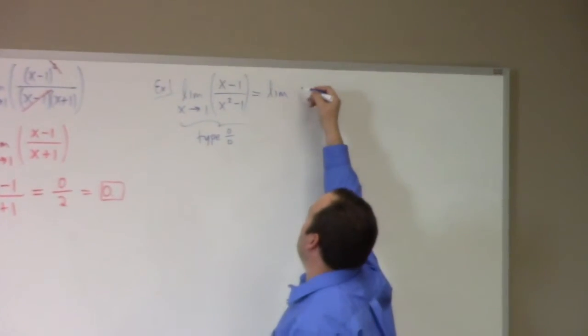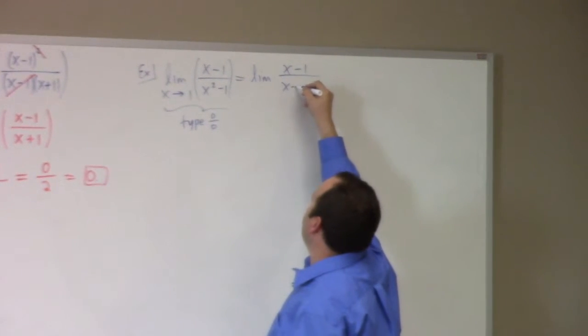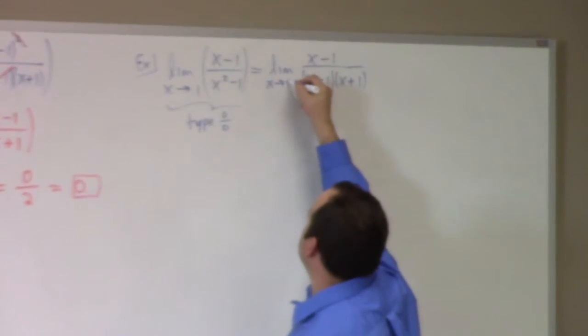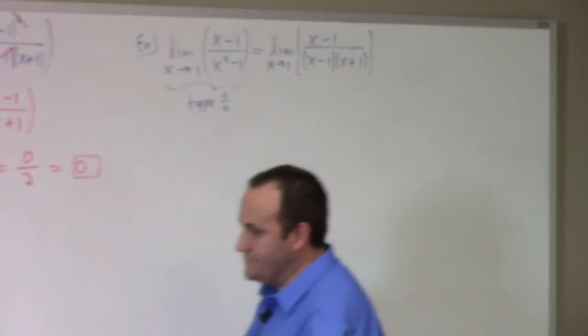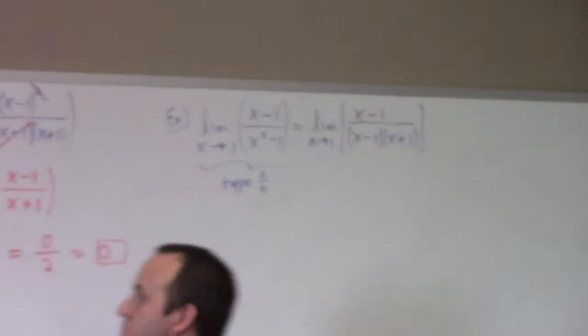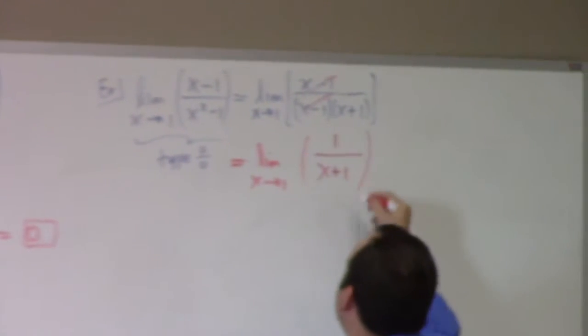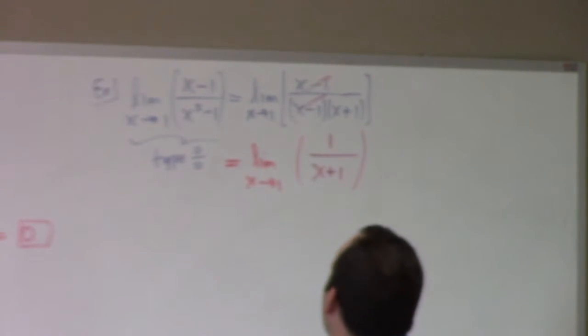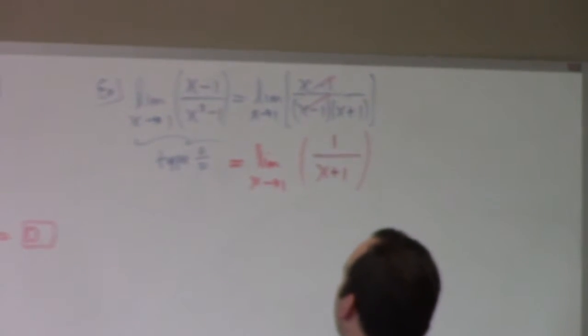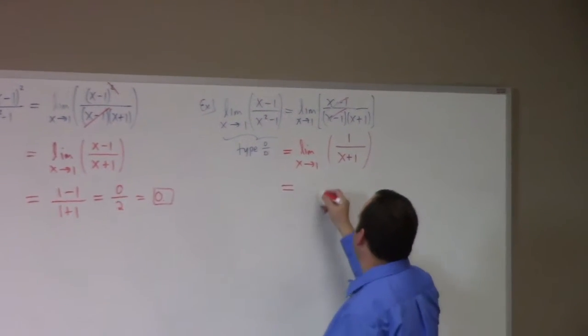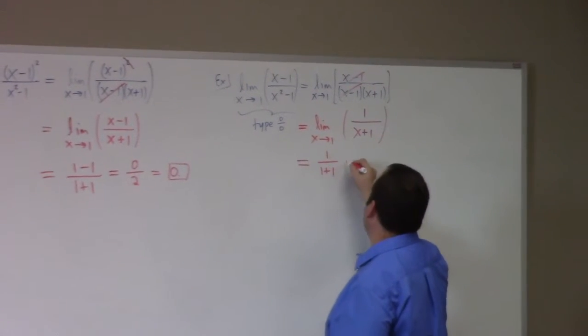Doing the factoring again, we just have one over x plus one. Oh hey this isn't so unhappy. Never mind I was thinking of something else. I'm actually very happy. This is one over one plus one otherwise known as a half.